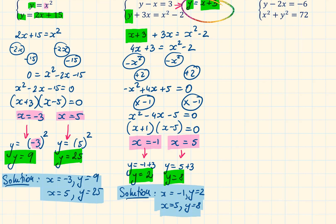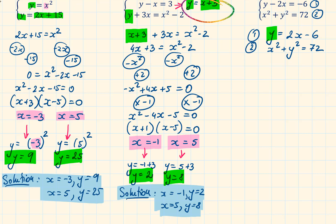Looking at the final question, again we are going to make y the subject of the formula. I am going to label them equation 1 and equation 2. Rewriting equation 1 gives us y equals 2x minus 6. Equation 2 is x squared plus y squared equals 72. Now we are going to substitute 2x minus 6 into the second equation where y is highlighted. This gives us x squared plus (2x minus 6) all squared equals 72.